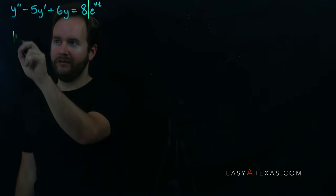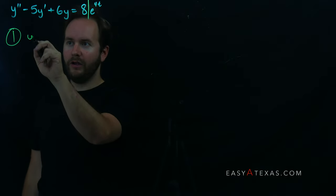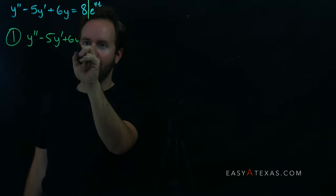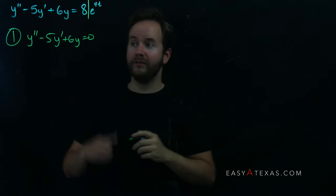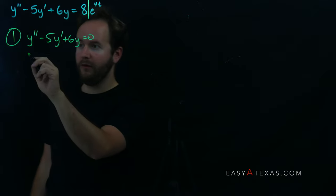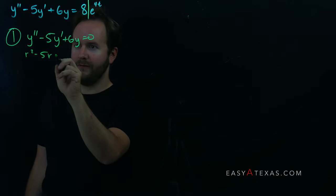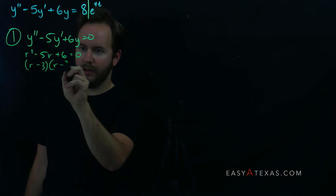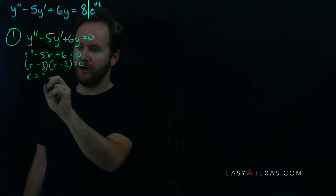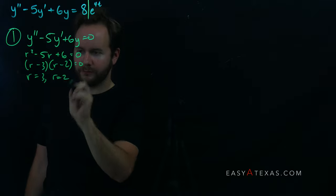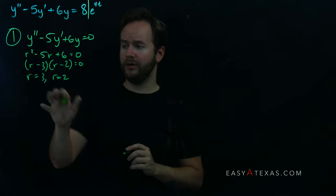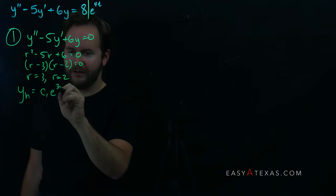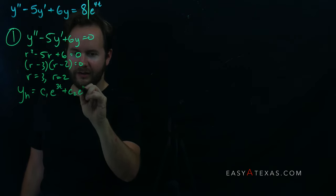Then we want to solve the homogeneous differential equation — that is, y double prime minus 5y prime plus 6y equals zero. We convert this to the characteristic polynomial r squared minus 5r plus 6, which factors into (r minus 3)(r minus 2), giving roots r equals 3 and r equals 2. That gives us the homogeneous solution c1·e^(3t) + c2·e^(2t).